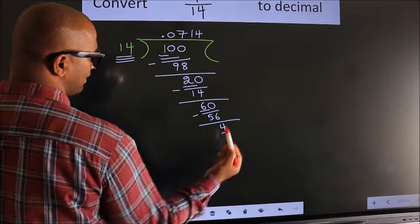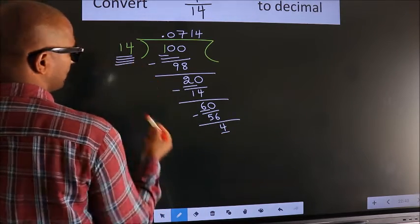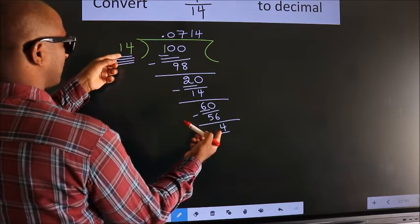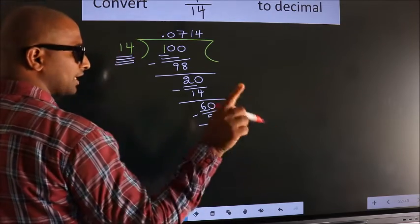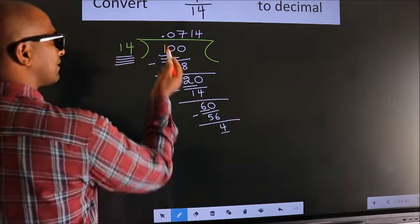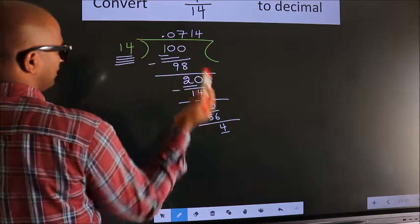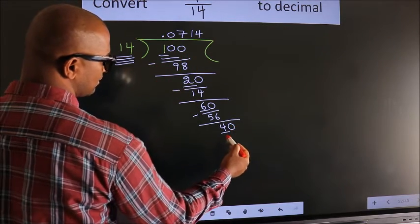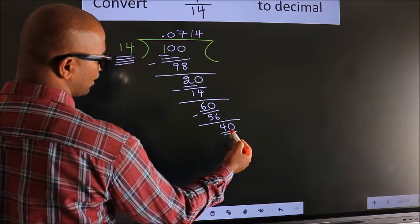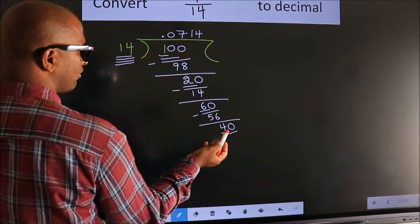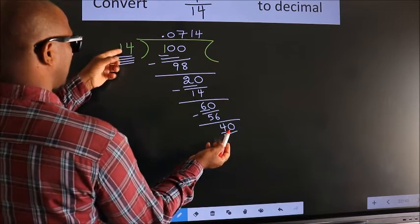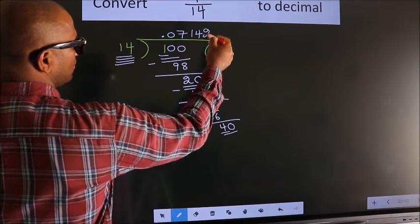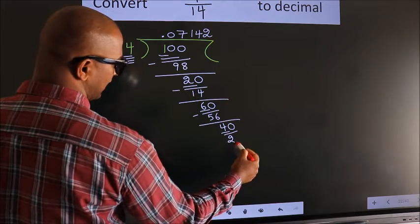We get 4. Here we have 4, here 14. 4 is smaller than 14, and we already have the decimal, so we can directly take 0. So 40. A number close to 40 in the 14 table is 14 twos, 28. Now we subtract and we get 8, then 12.